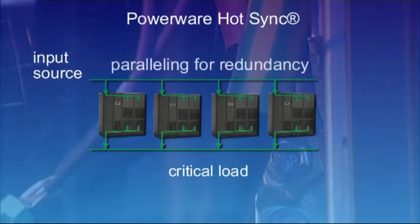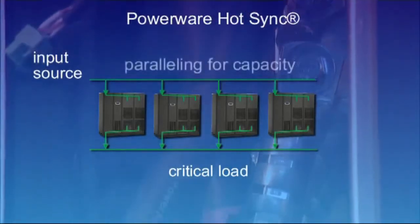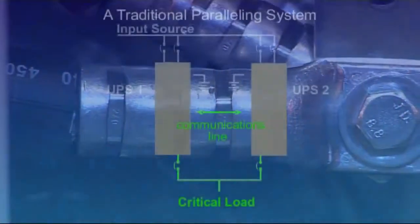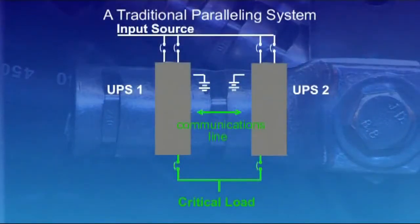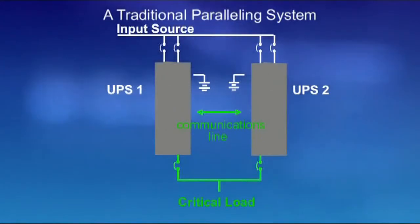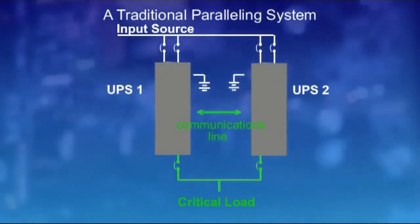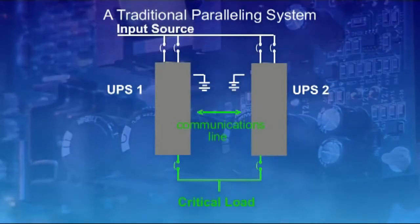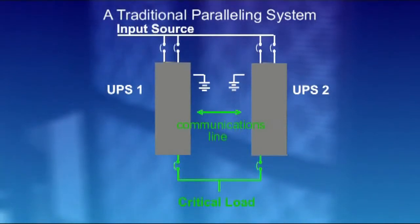Paralleling can be used to gain redundancy between UPS modules and to add capacity to the system. A traditional parallel UPS system depends on an output synchronization signal being transmitted between the parallel connected UPS modules via a communications line. Even in the most advanced systems, an external sync signal is required in order to ensure a balanced load share.